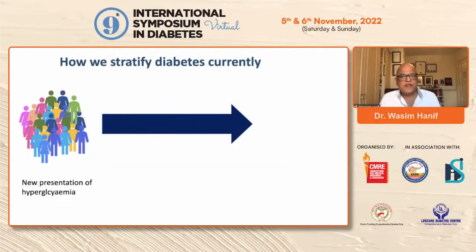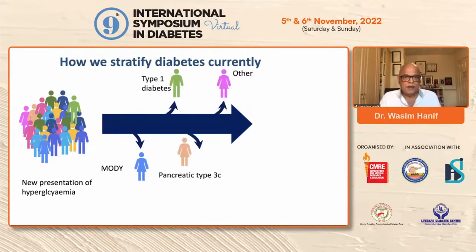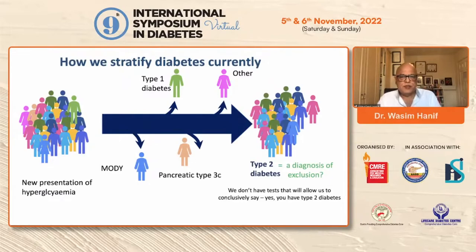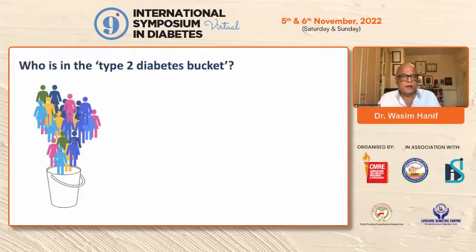Let us try to understand how we stratify diabetes currently. When somebody presents with new hyperglycemia — high glucose — the possibilities are: it could be MODY, it could be type 1 diabetes, it could be pancreatic type 3C diabetes, it could be others, or in most people, type 2 diabetes. As you would see, type 2 diabetes is mostly a diagnosis of exclusion, as we don't have any tests that will allow us to conclusively say, yes, you have type 2 diabetes.